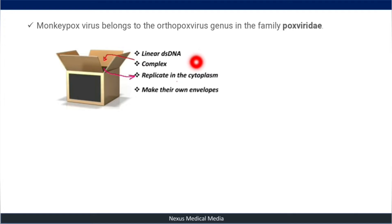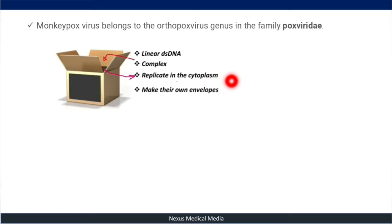Under a microscope they look like a box, which is why they're called 'pox in the box.' Most DNA viruses replicate in the nucleus, but Poxviridae viruses replicate in the cytoplasm. The mnemonic is 'pox out of the box,' where 'box' refers to the nucleus. They also have the ability to make their own envelopes.